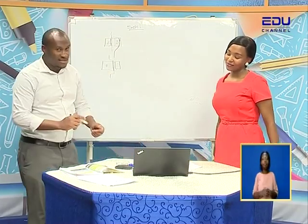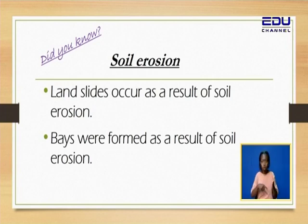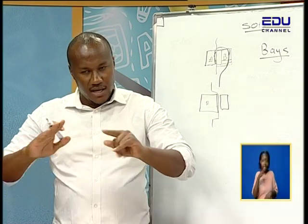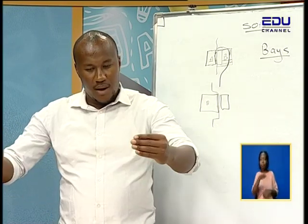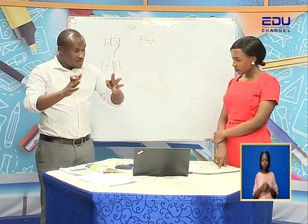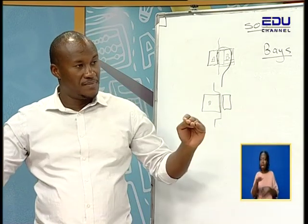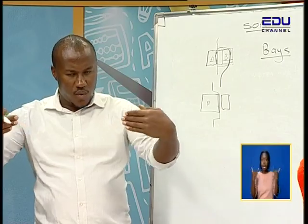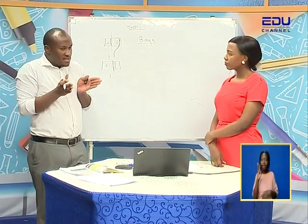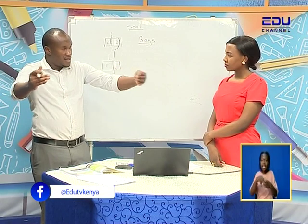Fact number two: bays are formed as a result of erosion. A bay is a water body that is partially enclosed by land. Bays mostly occur near large water bodies, especially oceans. You find water has entered into the land but has not been blocked completely — it is like a curve, with water inside and land around it.